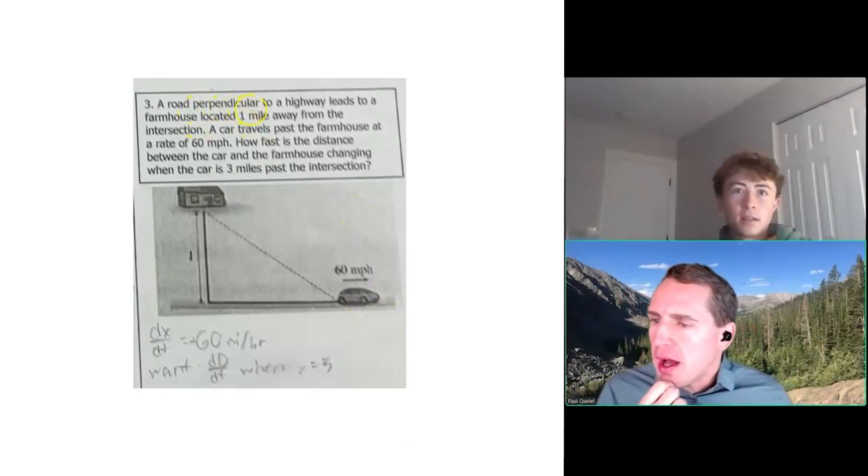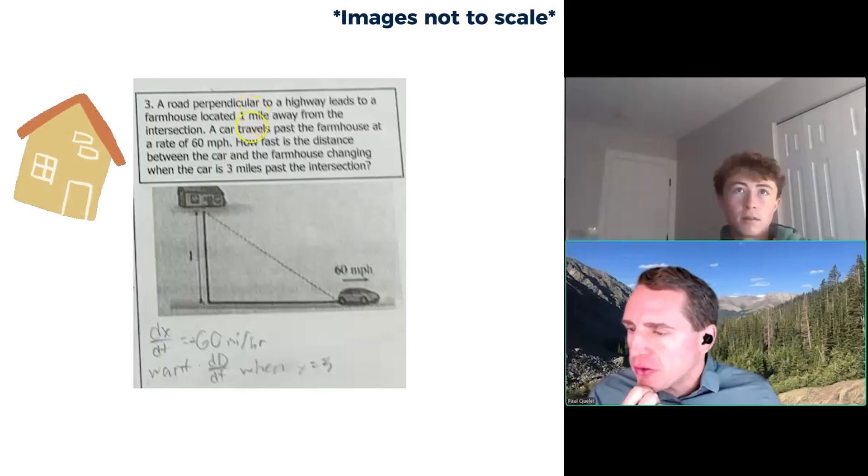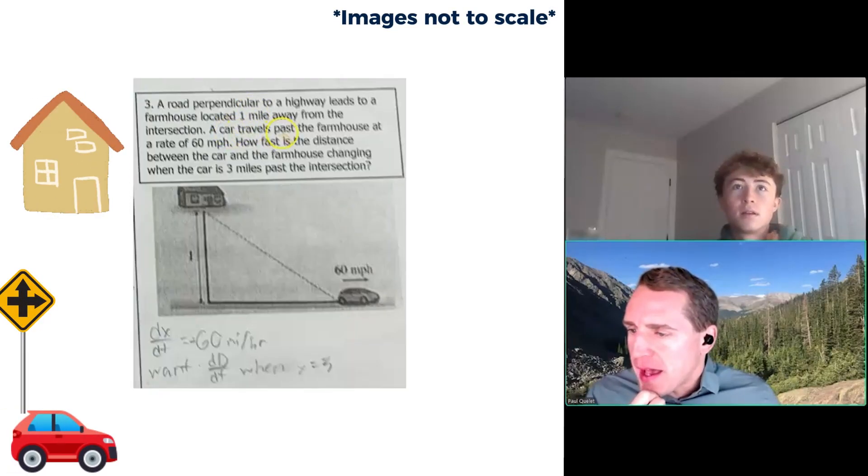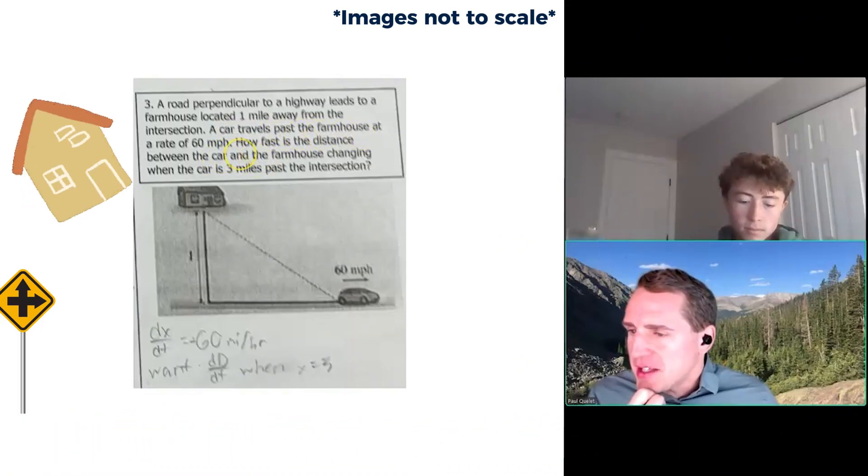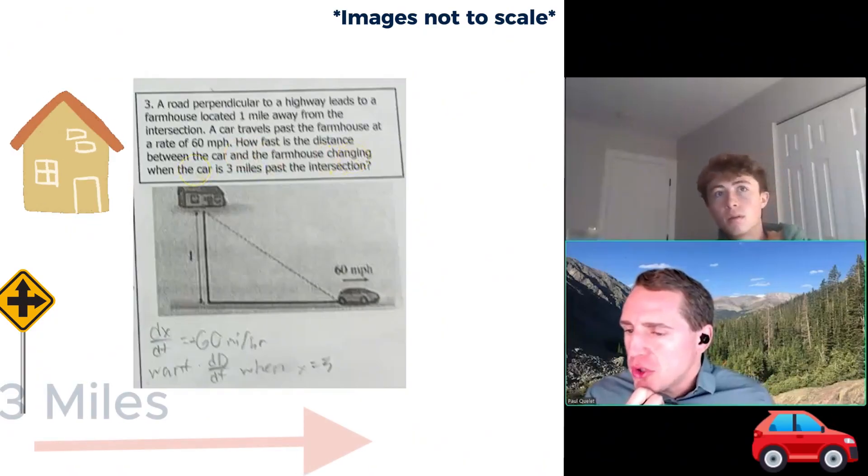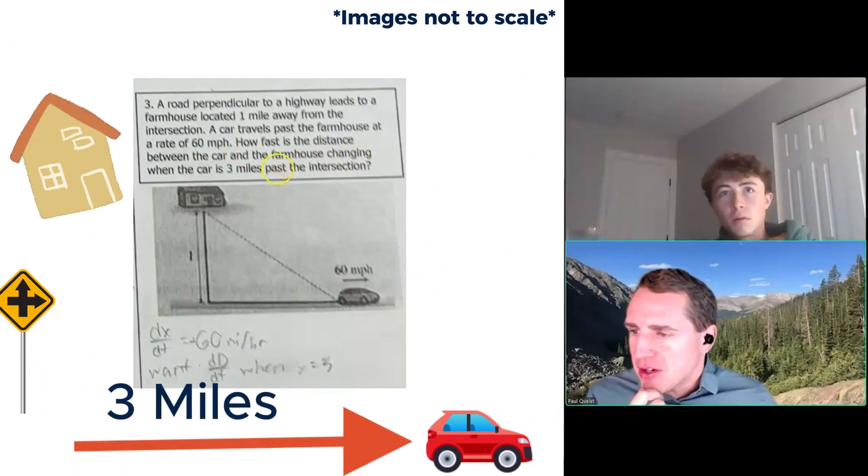A road perpendicular to a highway leads to a farmhouse located one mile away from an intersection. A car travels past the farmhouse at a rate of 60 miles per hour. How fast is the distance between the car and the farmhouse changing when the car is three miles past the intersection?